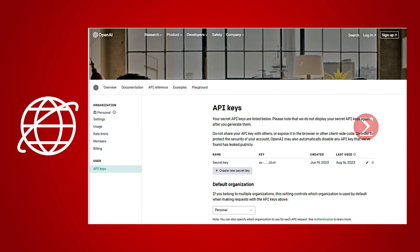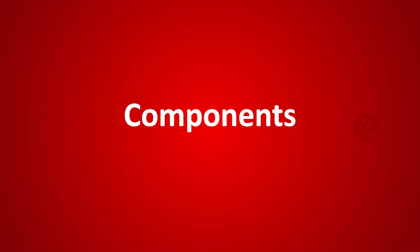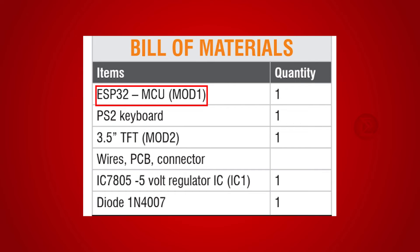You need an internet connection and a secret key to access the ChatGPT API. The components used to develop this project are an ESP32 board, over which the code will run, and a 3.5-inch TFT screen, over which the questions and answers will be displayed.